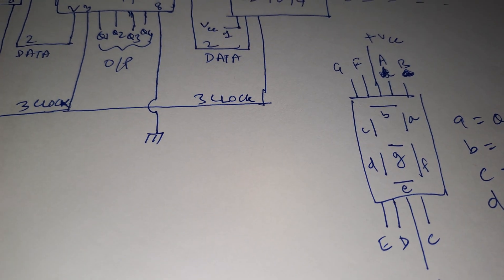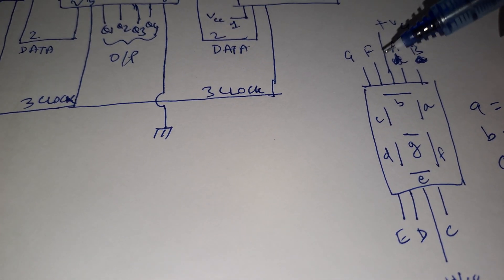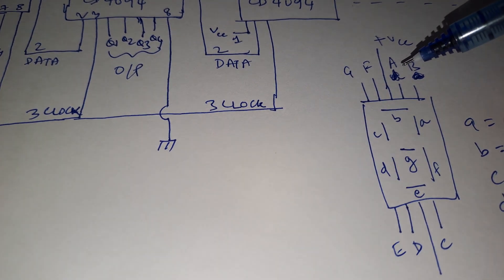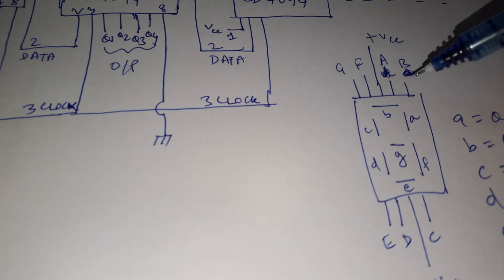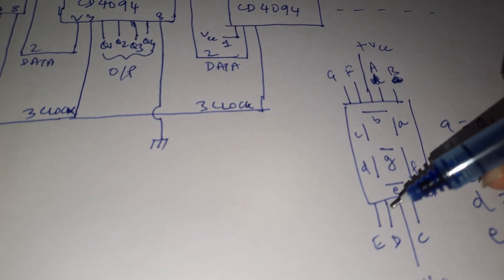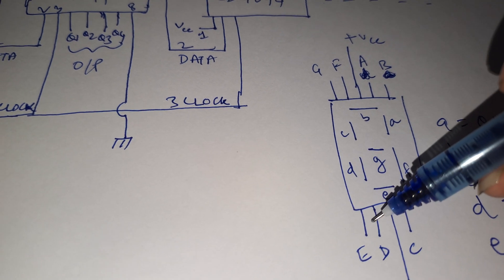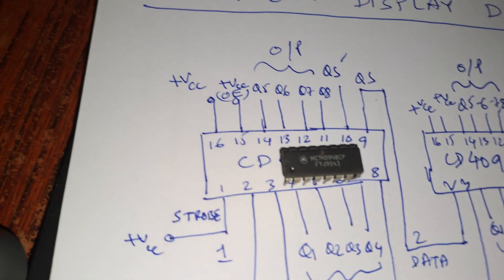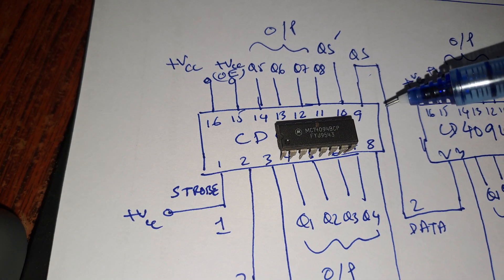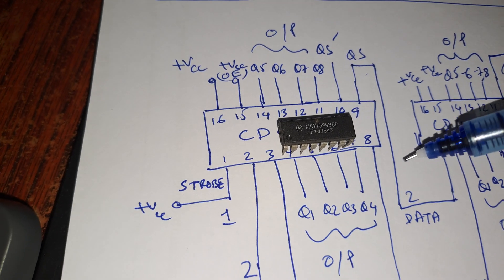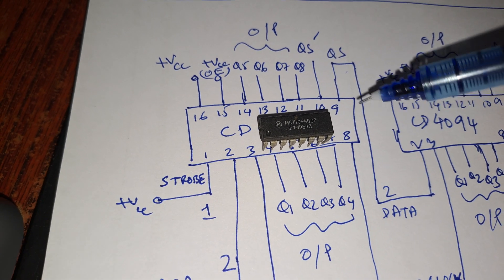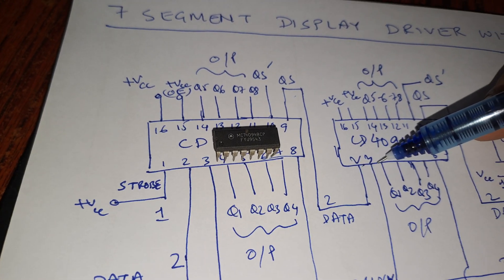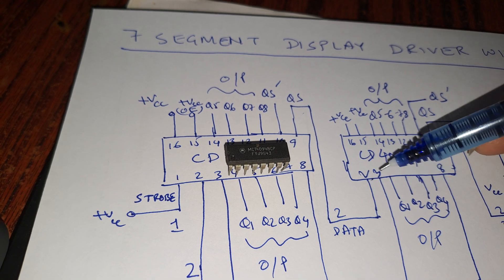This is the internal wiring of my 7-segment display. On terminal a you connect Q1 of the respective shift register, on b you connect Q2, on c you connect Q3, d is Q4, e is Q5, f is Q6, and g is Q7. The QS output carries the MSB, which is transferred to the second shift register.